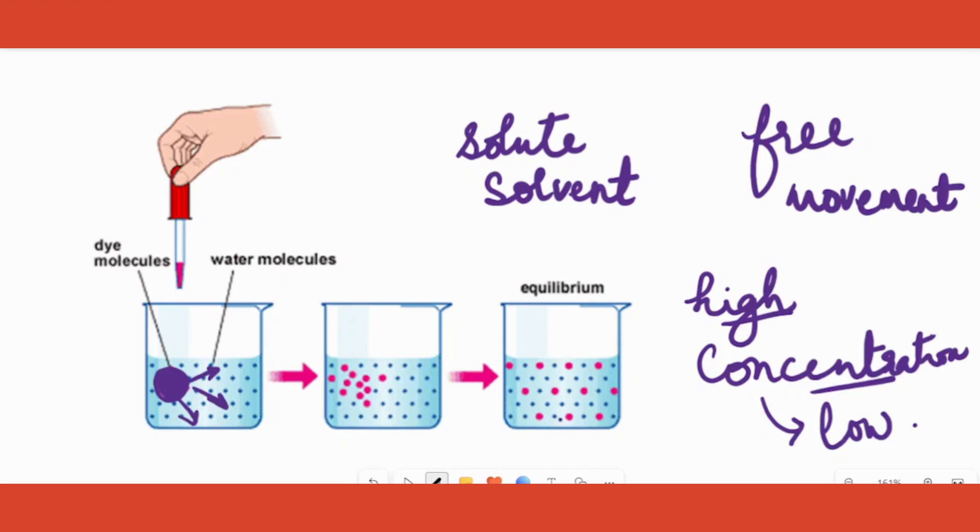So let's define it again. Diffusion is a free movement of molecules. What kind of molecules? Can be solute also, solvent also, from high concentration area to low concentration area. To this definition you have to add: high concentration area to low concentration area. I hope this is clear. Let's understand osmosis now.